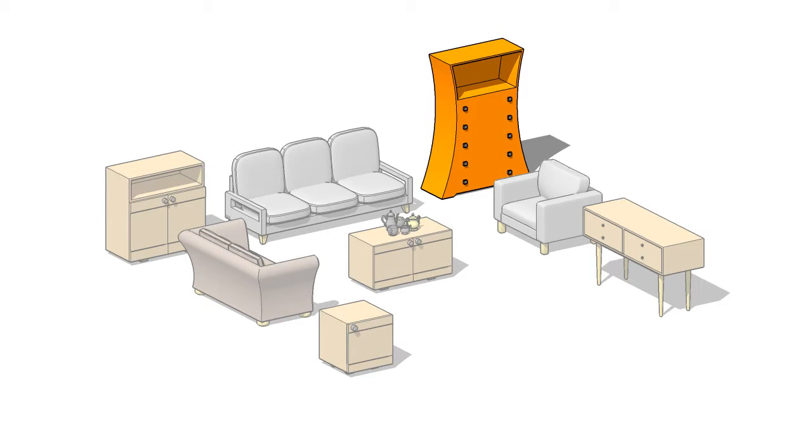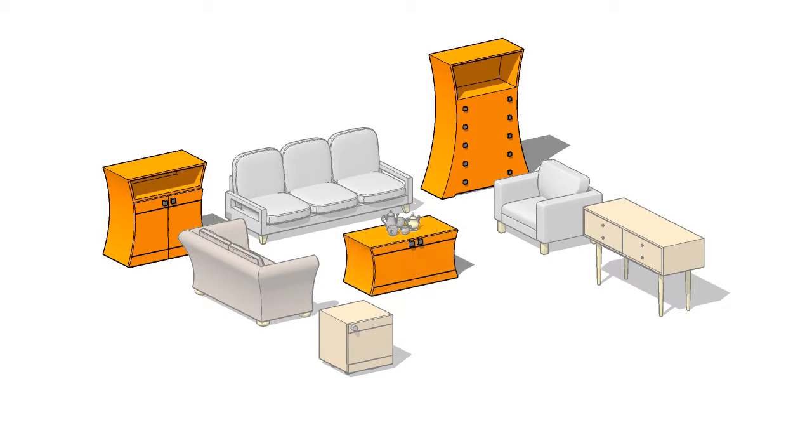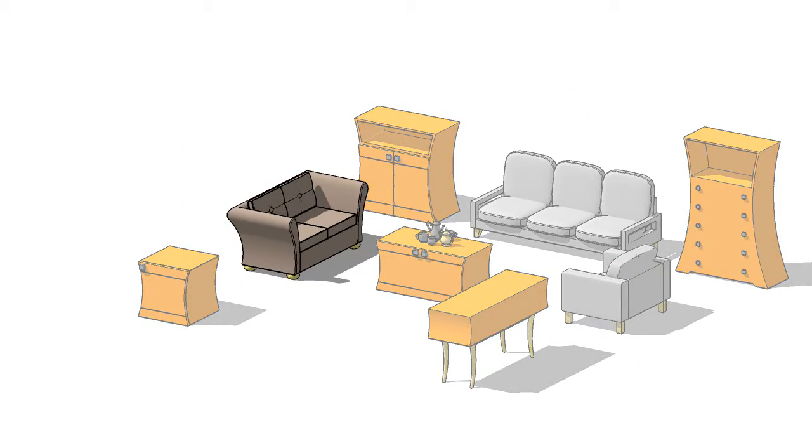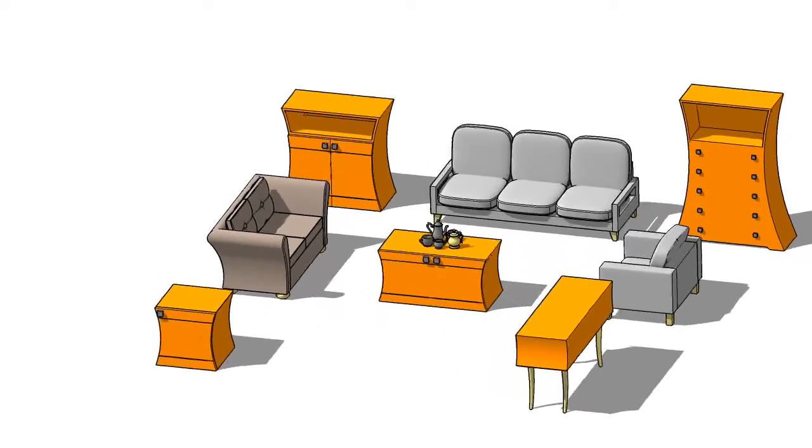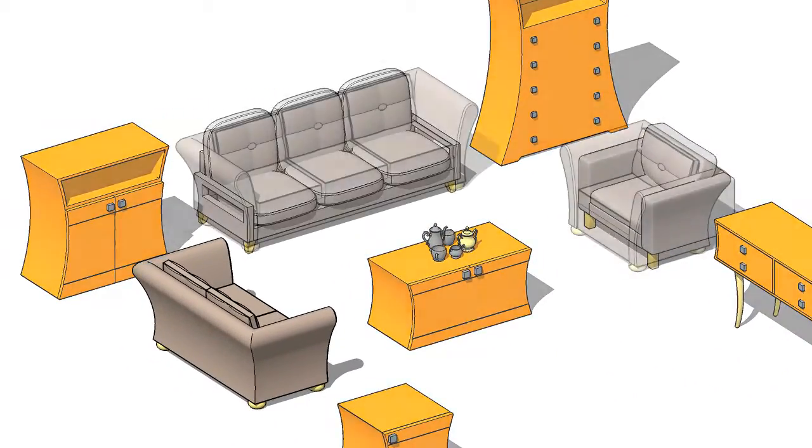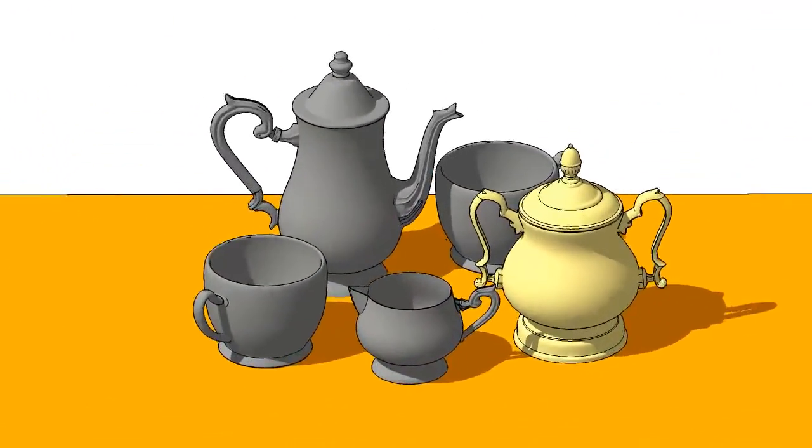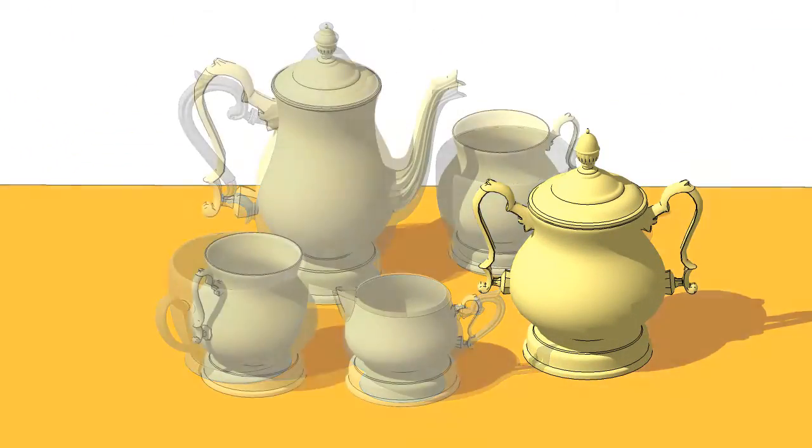Our method automatically transfers its style to functionally different target objects, such as the cabinet, coffee table, side table, and desk. It similarly transfers the style of the love seat to the sofa and armchair, and the style of the sugar pot to the rest of the coffee set.